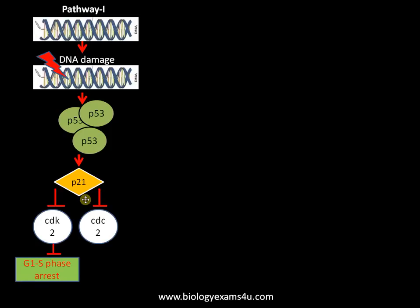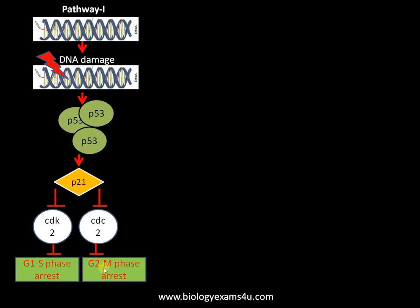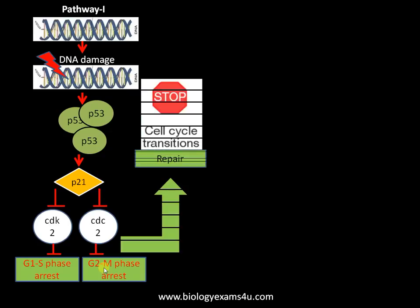CDK2 and CDC2 are cyclin-dependent kinases — both proteins are involved in cell cycle progression from G1 to S phase and also from G2 to M phase. Thereby, this inhibition of CDK2 and CDC2 by p21 will prevent the progression of the cell from G1 to S phase and also from G2 to M phase, resulting in cell cycle arrest. The cell then uses its DNA repair mechanism to try to repair the damage.